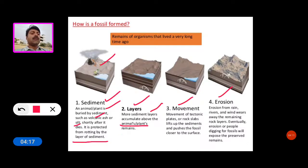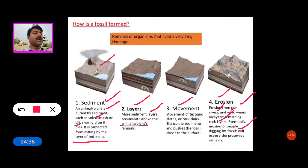The fourth type is erosion. Erosion from rain, rivers, and wind wears away the remaining rock layers. Eventually erosion, or people digging for fossils, will expose the preserved remains. So the four types of fossil formation are: sediment, layers, movement, and erosion.